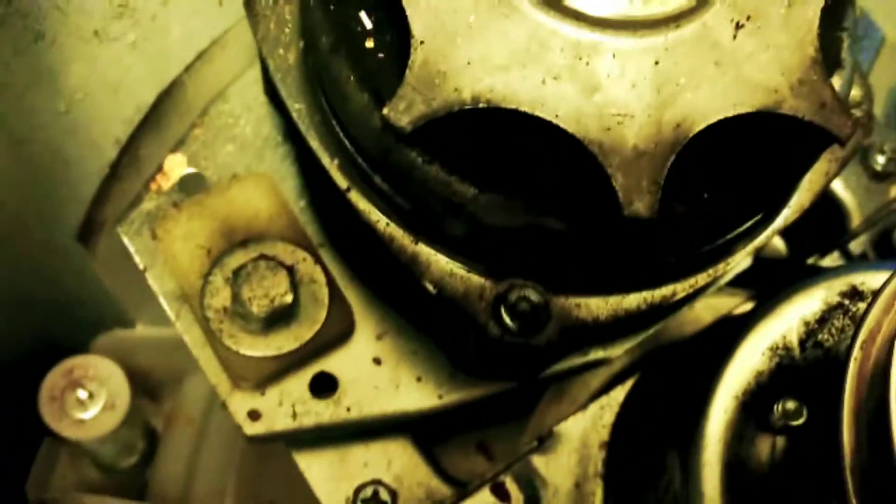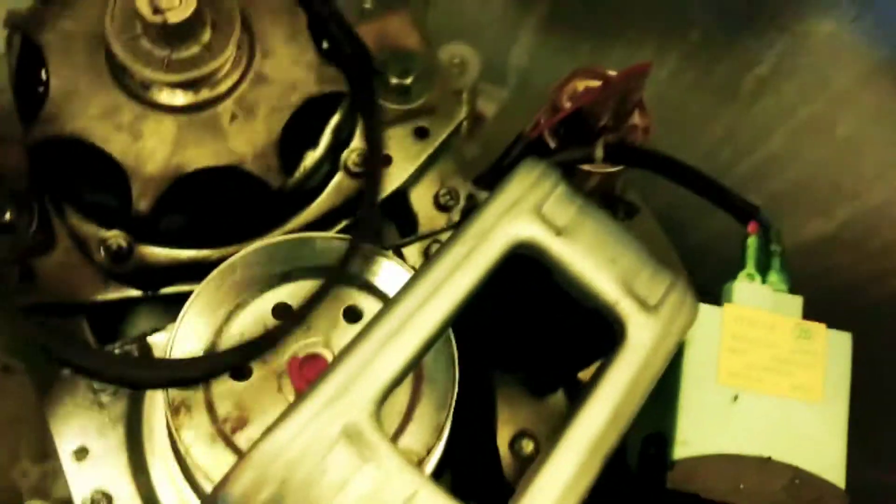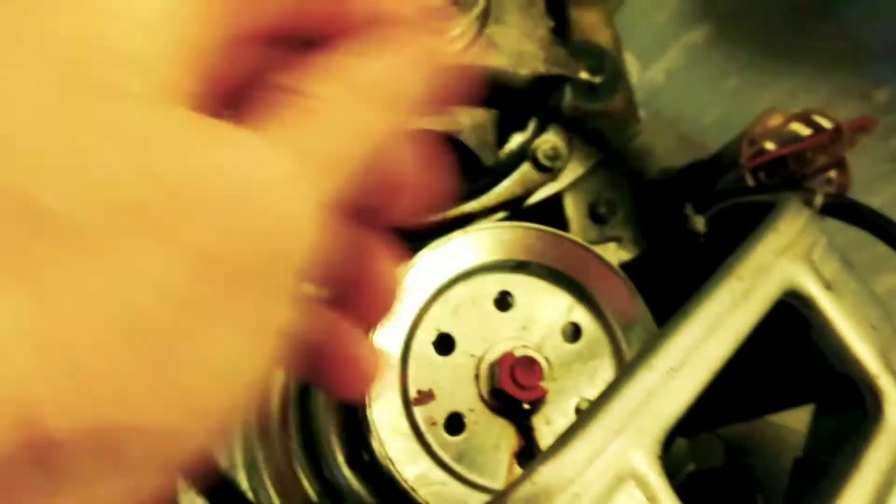So the belt was on like so. It goes around this inside track here. To get it off, I pulled hard up on this left edge until it kind of came up over the lip like that.